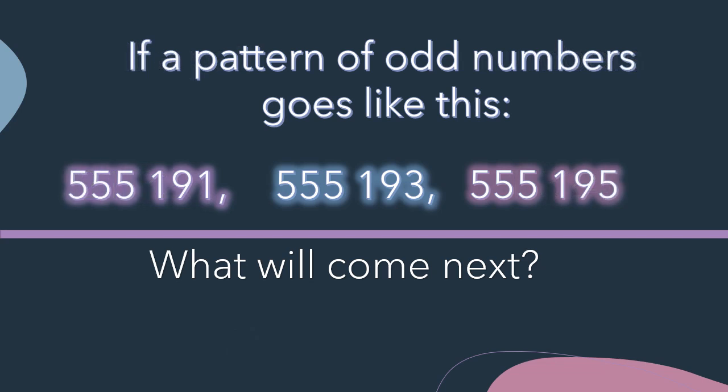If a pattern of odd numbers goes like this: 555,191, 555,193, 555,195. What will come next?